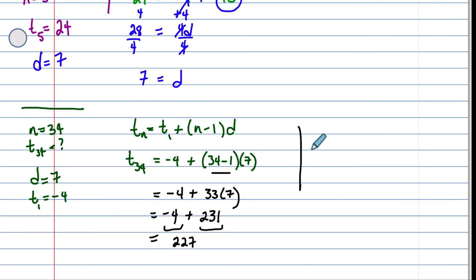The sequence looks like this, negative 4, and then we don't really care what these are. And then we had the 24, and then the pattern goes on till you hit that 34th term, and that value is 227.